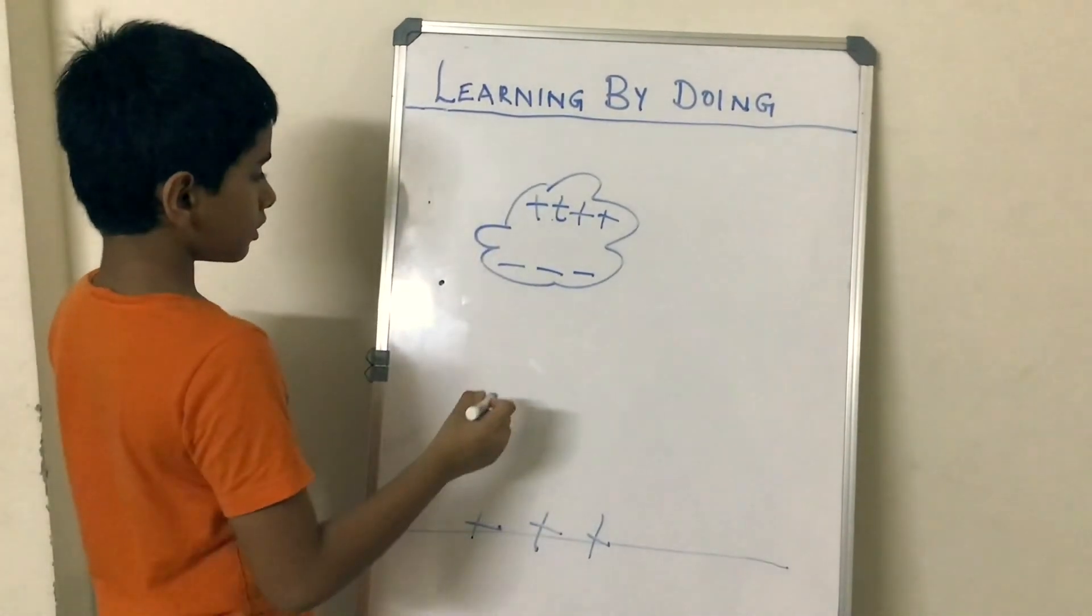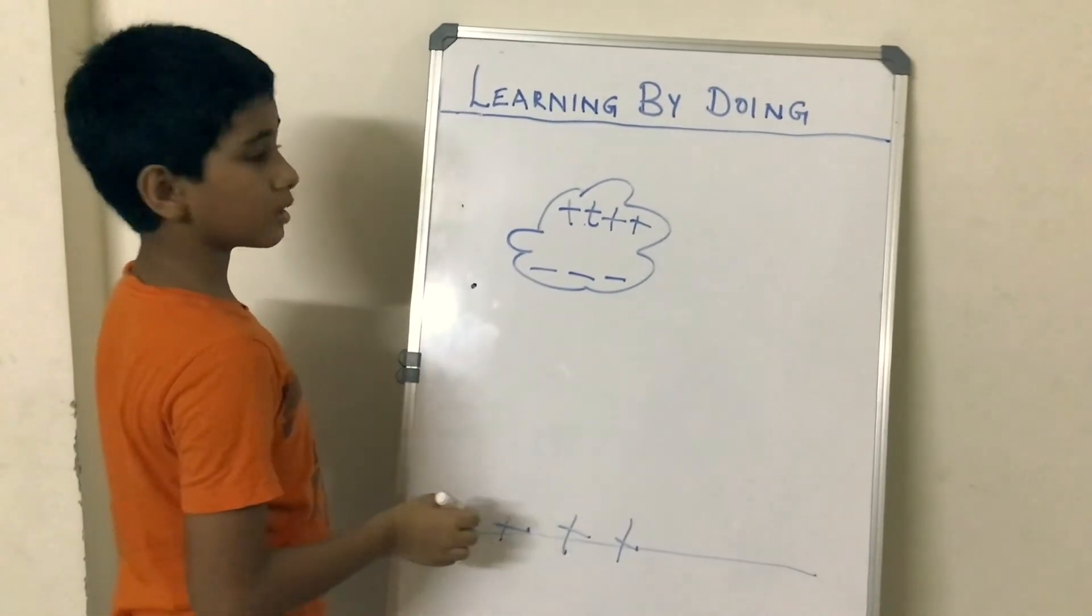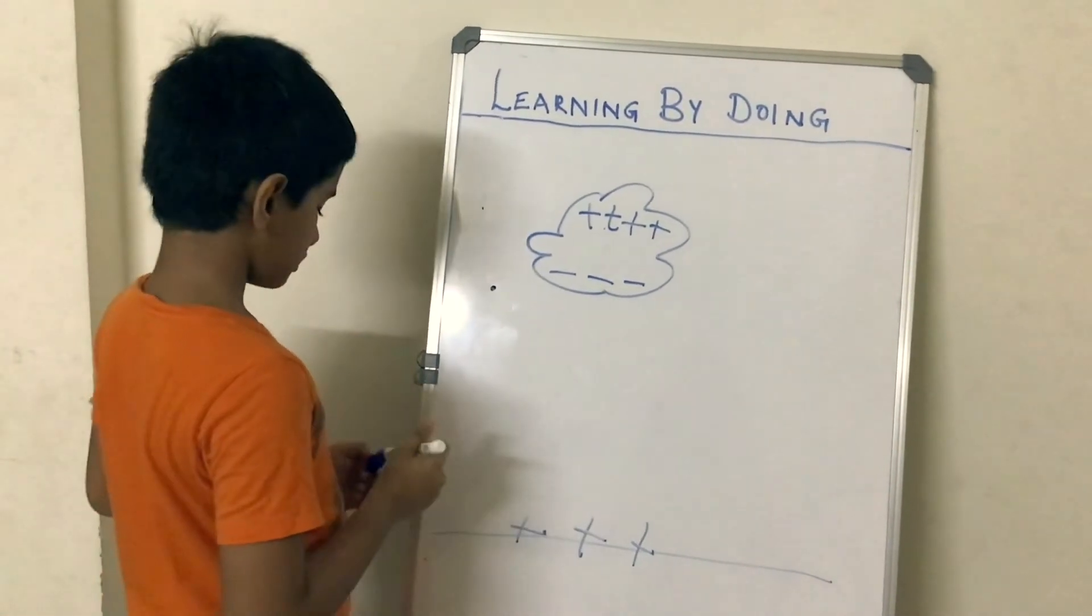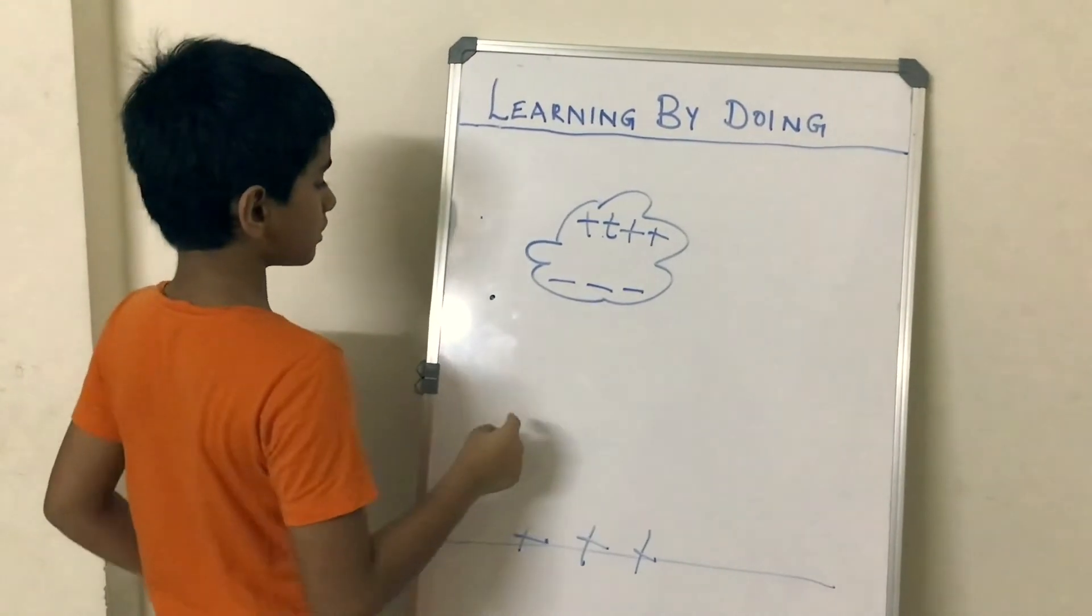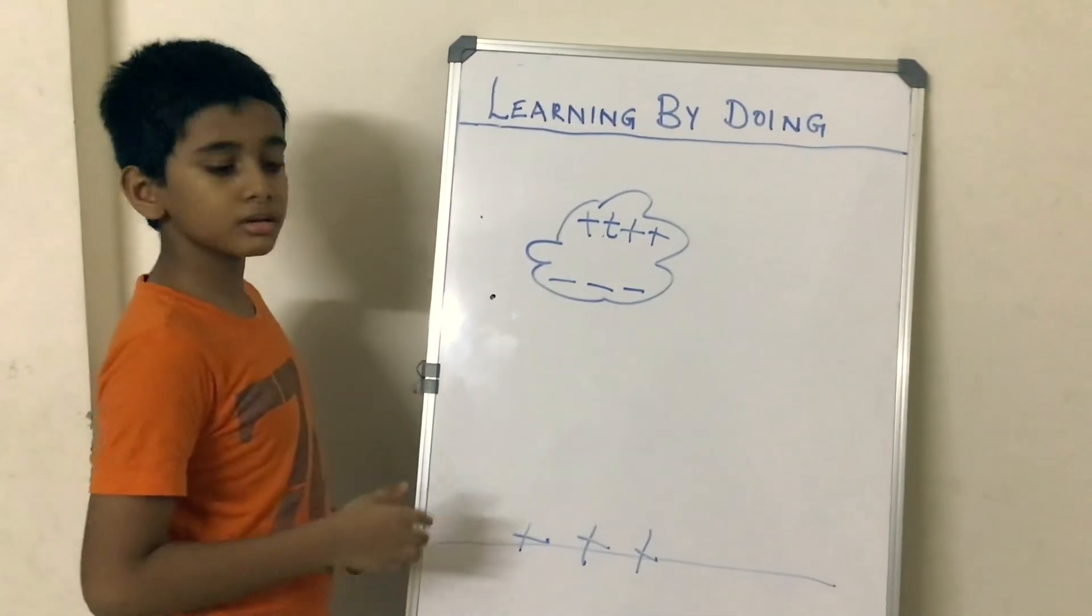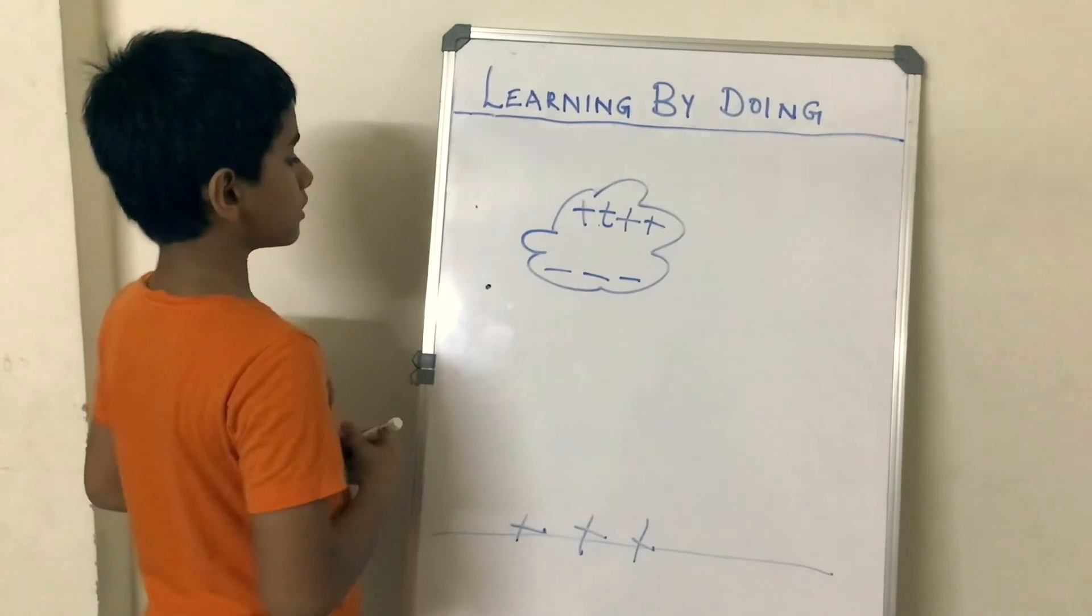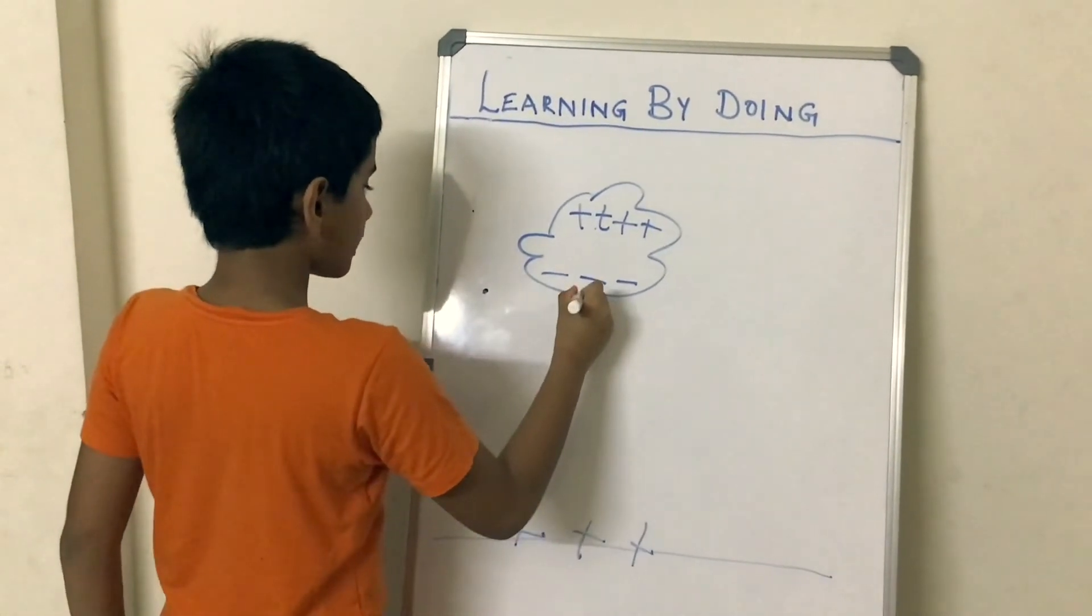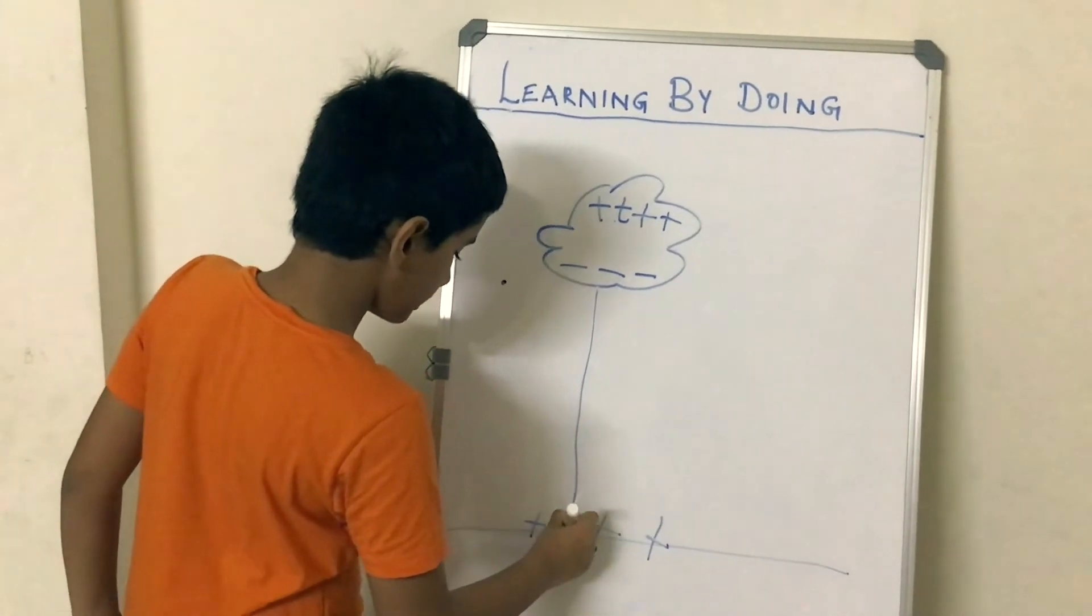So the negative charge is attracted to the positive charge because unlike charges attract, but it cannot go there because air is blocking it. Air will not let charges through. But soon it gets so strong that it overcomes the air and sends down a streak of lightning.